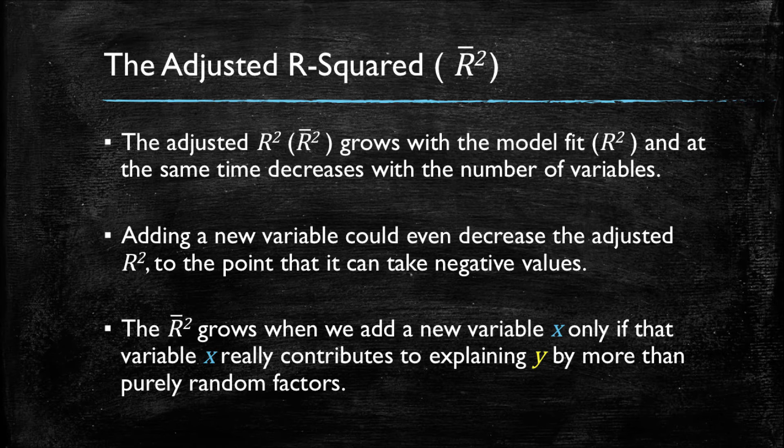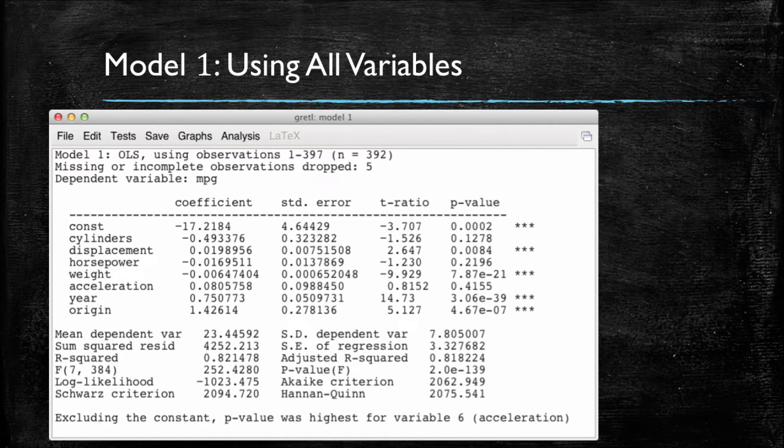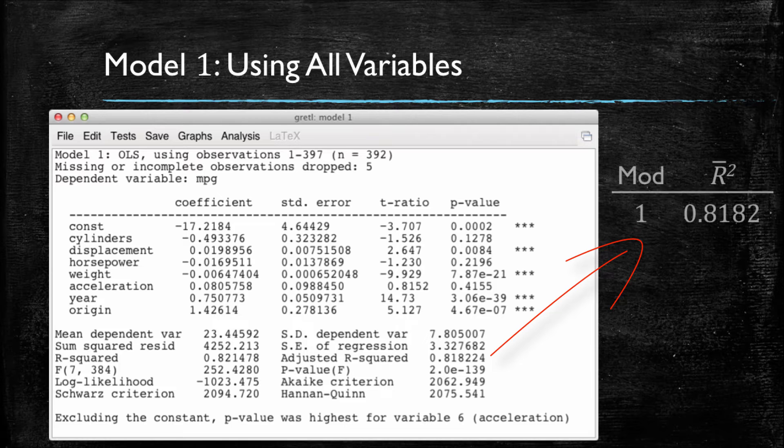So let's take a look again at our models. Our first model used all the variables, and we can note that it has an r-squared of 0.8214 and an adjusted r-squared, which is lower than the r-squared, of 0.8182. The adjusted r-squared will always be lower than the standard r-squared. And let me take note on the right-hand side of your screen of the adjusted r-squared, just so we can compare it to the adjusted r-squares of other models.